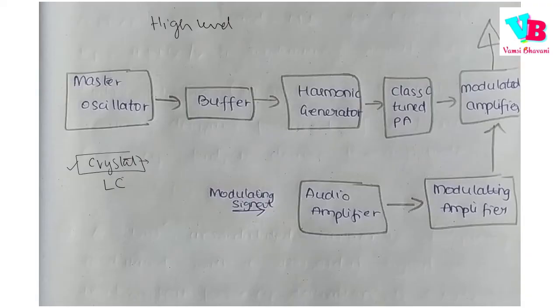The LC Oscillator is less stable as temperature changes and frequency can drift. The Crystal Oscillator maintains constant frequency, but replacing a crystal completely is costly. So if we use an LC Oscillator and temperature is an issue, we use a protection chamber. Basically, we use the Master Oscillator as an LC Oscillator.